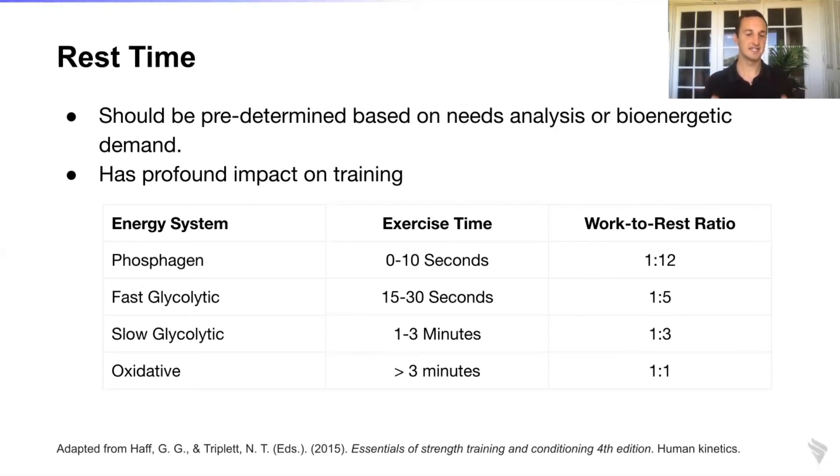As you transition down the columns here, you can see that we work from the phosphagen system, fast glycolytic, so glycolytic to the oxidative system. And again, the work-to-rest ratios kind of decrease with that load and intensity specifically. So phosphagen system bout would be most intense, oxidative system bout would be least intense. So it takes more time to recover from a phosphagen bout than it would to recover from an oxidative bout. But all in all, the primary takeaway here is that based on how long you're prescribing exercises, there are optimal work-to-rest ratio zones. And this is specific to improving somebody's performance, not necessarily their energetic capacity.